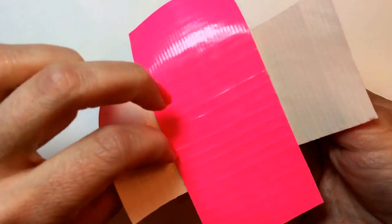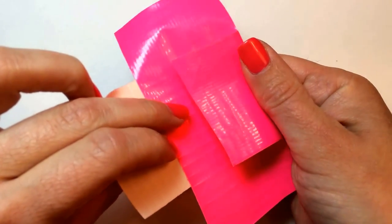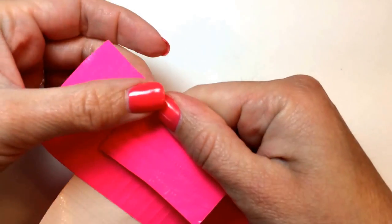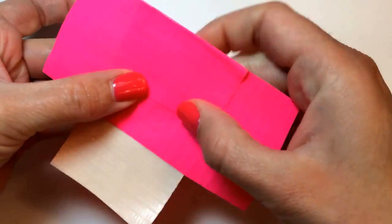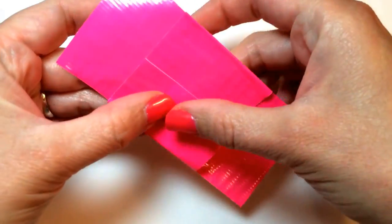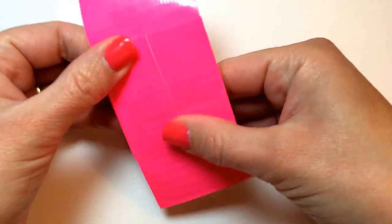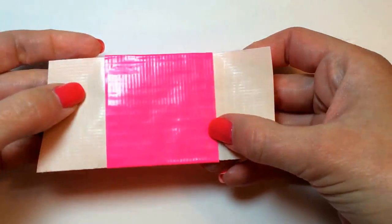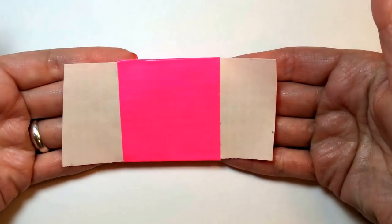And then with just one of the sides, fold it over on both sides to wrap around so that it looks like a giant band-aid now.